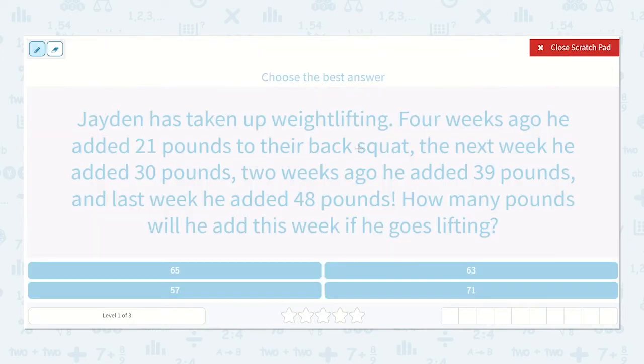So I see that four weeks ago he had added 21 pounds. Then the next week he added 30 pounds. Two weeks ago he added 39 pounds and last week he added 48 pounds. So let's see if we can find a pattern. So we have 21, 30, 39, 48, and then our missing number.